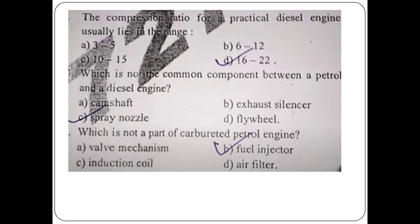Which is not a part of the carbureted petrol engine? The options are: fuel injector, induction coil, air filter. The fuel injector is not a part of the carbureted petrol engine.